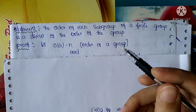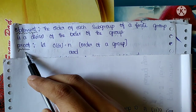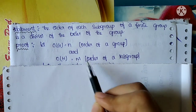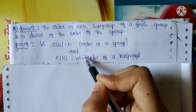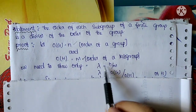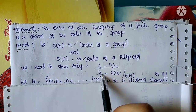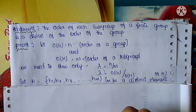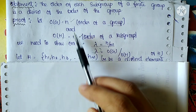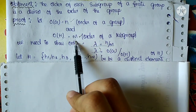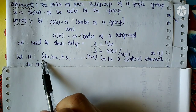We will write the statement and proof of Lagrange's theorem directly. Order of H is equal to m — here order of H means the subgroup has m elements and the group has n elements. We need to show only that lambda is equal to n by m, i.e., lambda equals order of G divided by order of H.